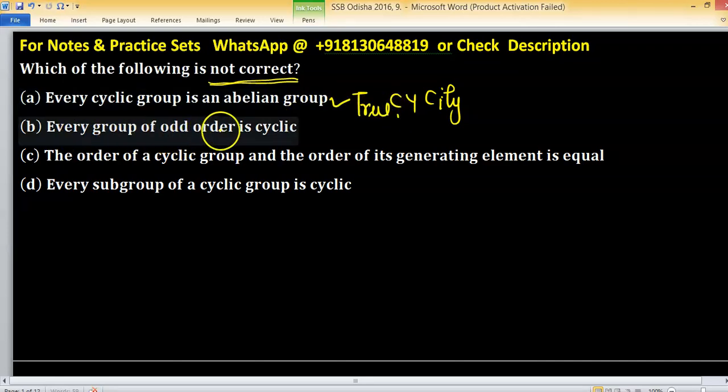Option b: Every group of odd order is cyclic. By the order we can't say about cyclicity, but if group order is prime then group of prime order is cyclic.